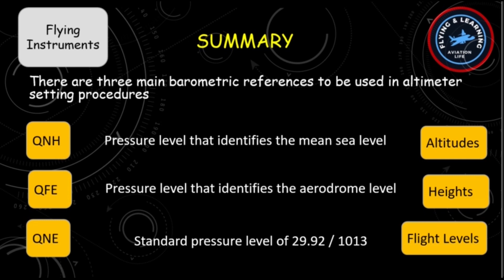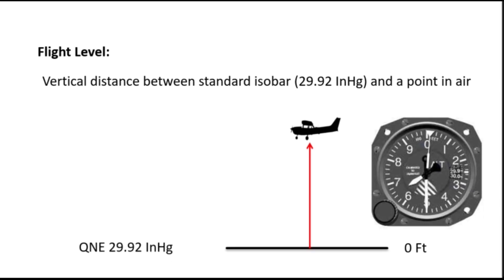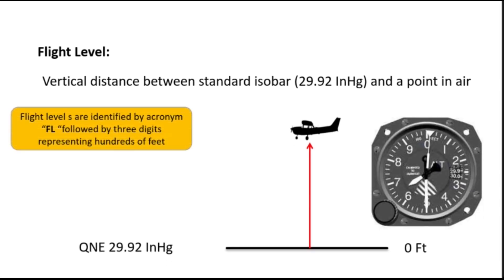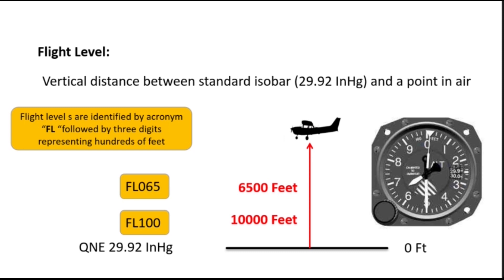Let's understand flight level in more detail. A flight level is the vertical distance between the standard isobar and a point in air. Flight levels are identified by the acronym FL followed by three digits representing hundreds of feet. For example, if an aircraft has set QNE as a reference and the altimeter is showing 6,500 feet, it will be represented as Flight Level 065. If the altimeter is reading 10,000 feet, it will be represented as Flight Level 100.